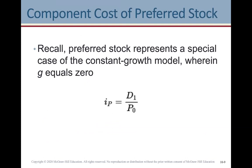In terms of calculating the cost of preferred stock, it's a special case of the constant growth model where g = 0. In that case, the return on preferred stock equals D1 for the preferred stock divided by P0 of the preferred stock, with growth equal to zero.